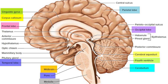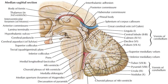It is also of prime importance in the conveyance of motor and sensory pathways from the rest of the brain to the body and from the body back to the brain. These pathways include the corticospinal tract for motor function, the dorsal column medial lemniscus pathway for fine touch, vibration sensation, and proprioception, and the spinothalamic tract for pain, temperature, itch, and crude touch. The parts of the brainstem are the midbrain, the pons, and the medulla oblongata.